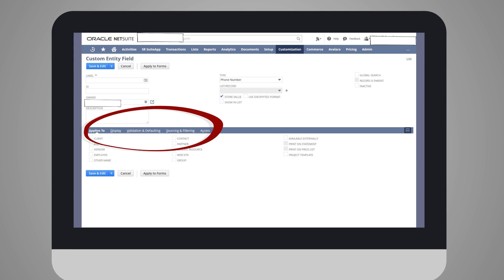Following the initial fields are five subtabs: Applies to, display, validation and defaulting, sourcing and filtering, and access. Notice that the content of some of these subtabs may vary depending on the field type you have previously selected.